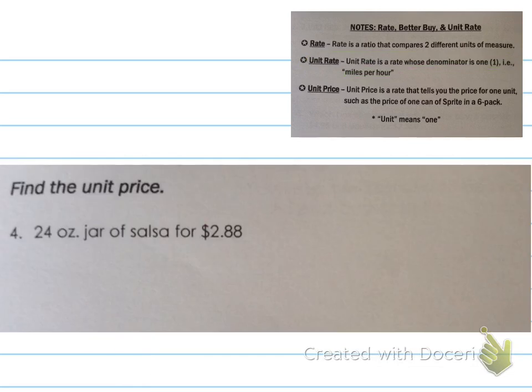Now we need to find the unit price. So if we look at our notes, the unit price is the rate that tells us the price for one unit. Like the price of one can of soda in a six pack. So when we're doing these problems, it's important to remember that when we set up our ratio, we should have the price over the item.